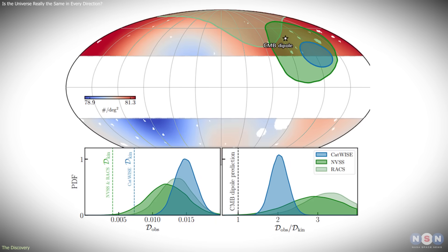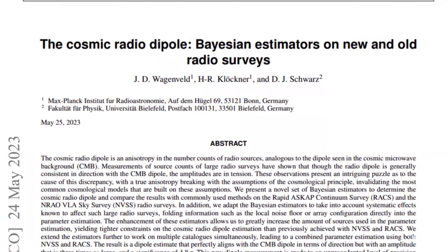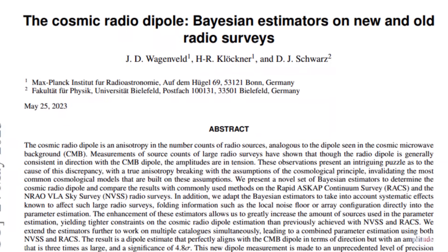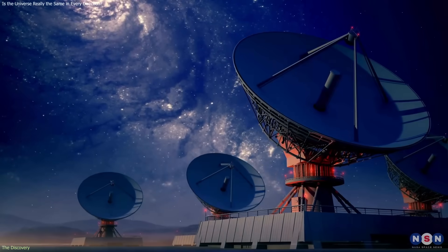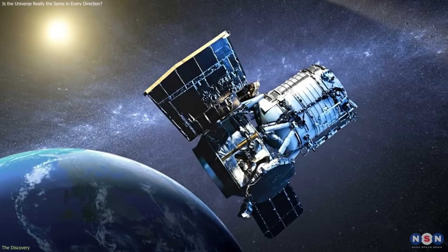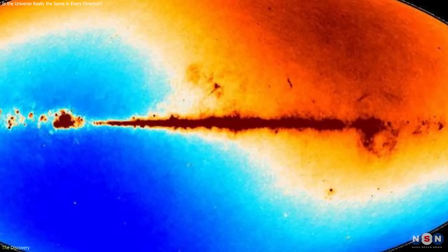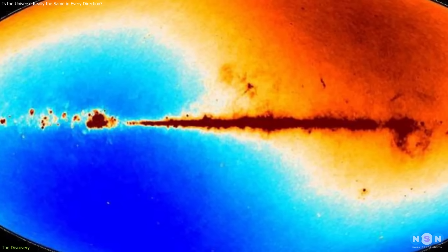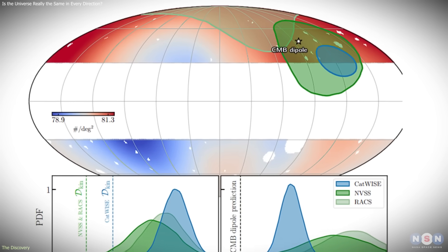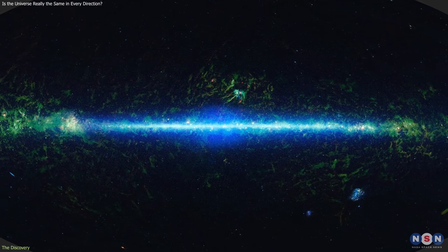This discrepancy has now been observed across independent surveys, different wavelengths, and multiple analysis techniques. Ground-based radio telescopes and space-based infrared missions, which are affected by very different systematics, report the same pattern. That consistency makes it increasingly difficult to attribute the result to instrumental error or survey bias alone.